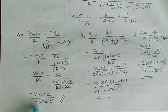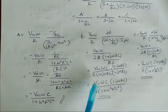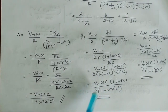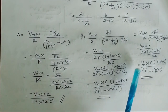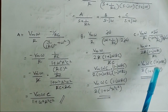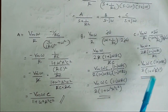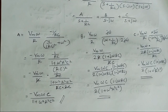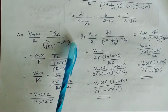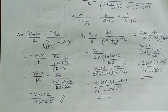After simplification, A = −Vm·ω·C / (1 + ω²R²C²), and C = Vm·ω·C·(1 + jωRC) / [2·(1 + ω²R²C²)]. We can now substitute the values of A, B, and C back into the I(s) equation.